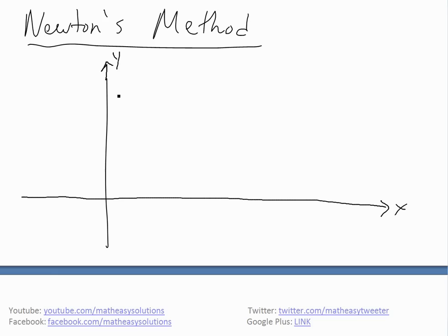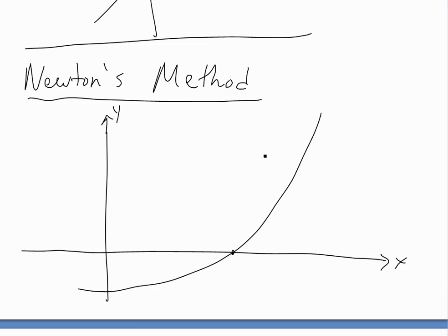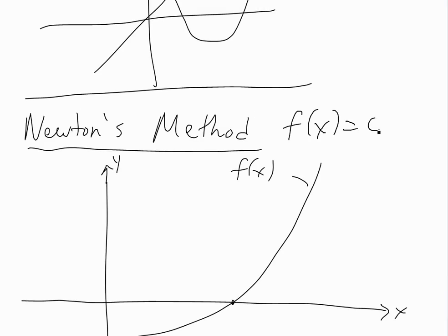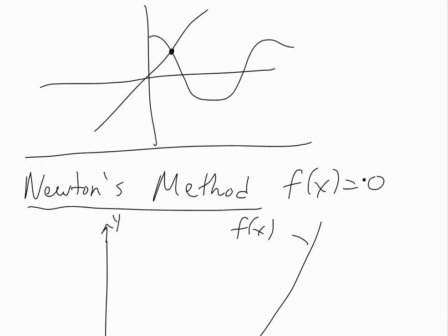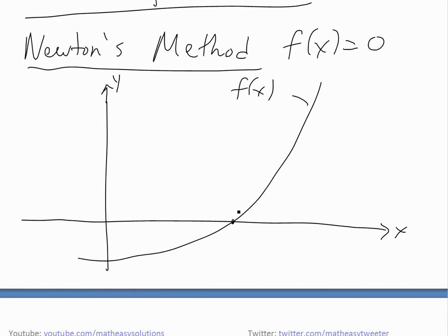Okay, so if you have the x and y-axis and a function drawn on it, and you want to find the roots of this function — remember, if this is f of x and we want to find the roots, we have f of x equals zero. This is how formulas like the quadratic formula work — you want to find what x is when the whole function equals zero. So we need to find this intersection point with the x-axis; let's call this r.